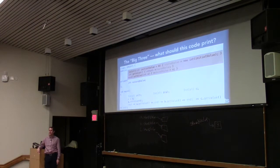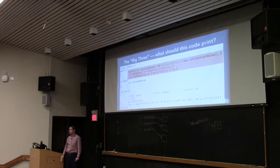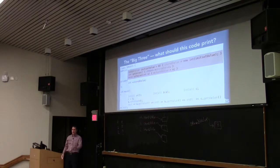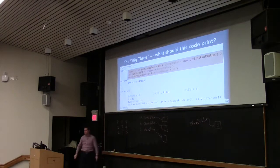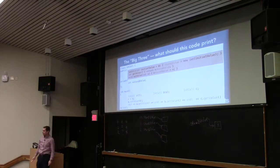OK, who can tell me what this prints out? The answers are: 4, 2, 2; or 4, 2, and something random; or 4, 4, 4. Let's walk through what actually happens. We create an IntCell with the default value of 2 — that gives us a box, puts a 2 in there, and stored_value points to it.